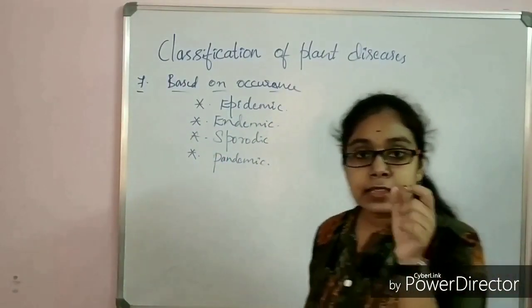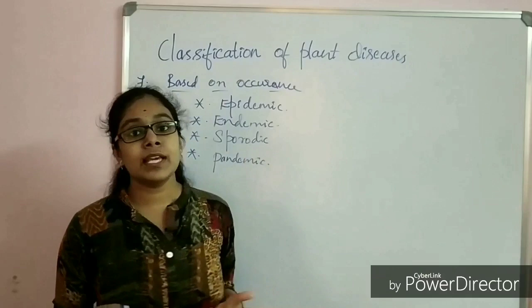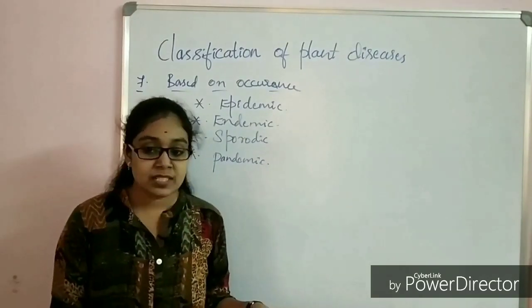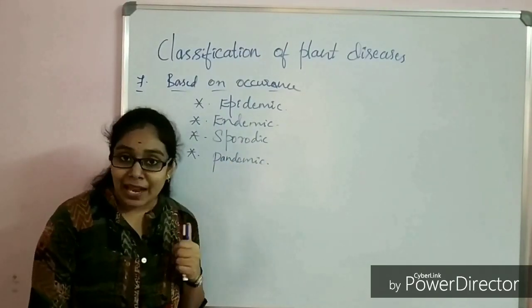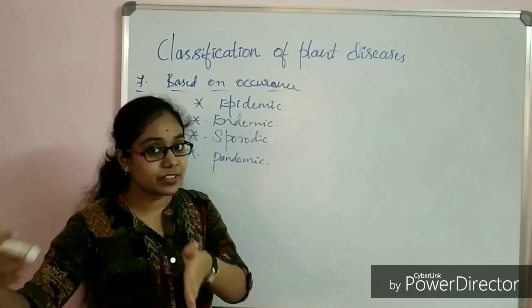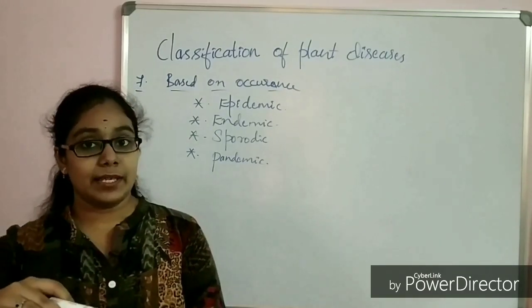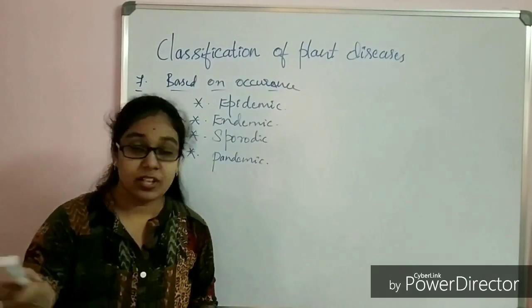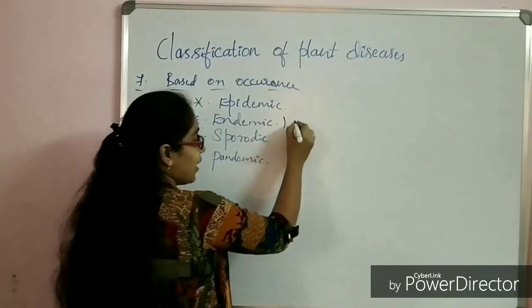Endemic diseases are not confined to one geographical area as epidemic plant diseases are; instead, endemic plant diseases are widespread with a sudden outbreak. The consistency of infection in endemic diseases is very much severe — more so than in epidemic plant diseases — and these diseases reach a very severe level upon the onset of favorable conditions. Another name for endemic plant diseases is epiphytotic diseases.